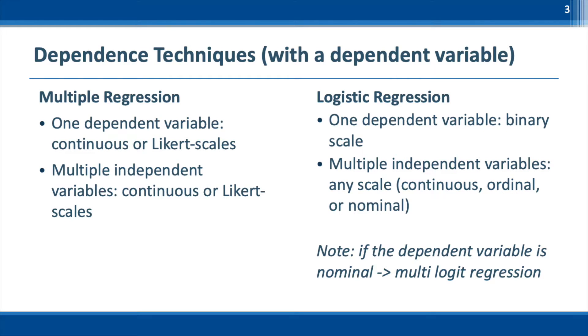A dependence technique is defined as one in which the dependent variable is predicted or explained by other variables known as independent variables. On the other hand, an interdependence technique is the one in which no single variable is defined as being independent or dependent. Let's talk about dependence techniques. These techniques are determined based on the number of dependent variables and independent variables and measures of these variables.